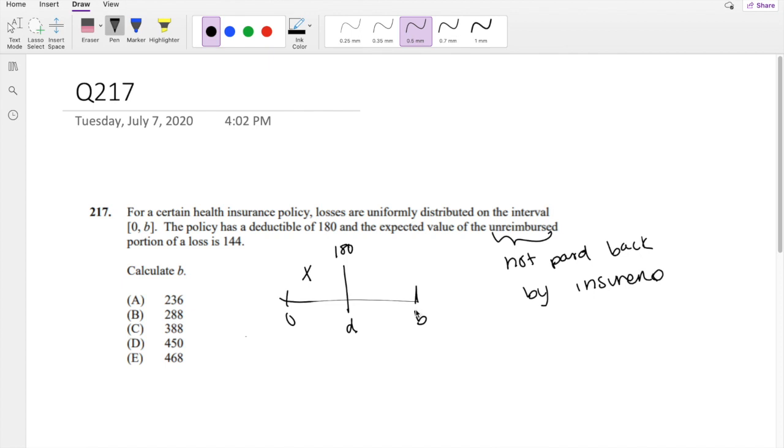But from deductible on, no matter what your loss is, the maximum amount you're not reimbursed for is 180. So no matter what it is, from deductible to the maximum B, it's going to be 180. That's the amount of loss the customer faces.